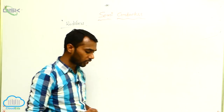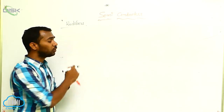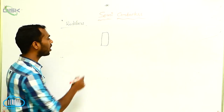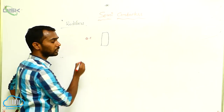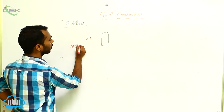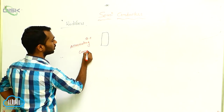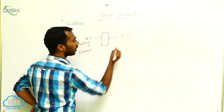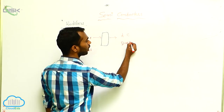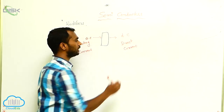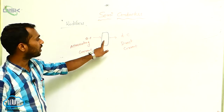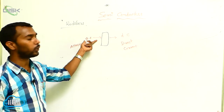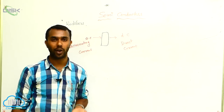First, we have to know the definition of a rectifier. A rectifier is a device that converts AC current — alternating current — into DC current, which is direct current. So this device is named a rectifier. A rectifier is an electronic device that converts alternating current into direct current.